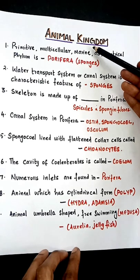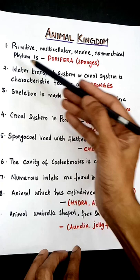Important MCQ points in animal kingdom. The primitive, multicellular, marine, asymmetrical phylum is phylum Porifera — the sponges.